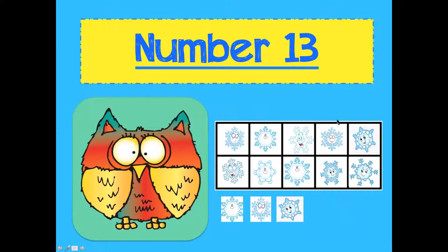Again, our large 10-frame — the 10-frame is full. Number one represents a group of 10, and then number three represents three little ones. So: 1, 2, 3, 4, 5, 6, 7, 8, 9, 10, 11, 12, 13.